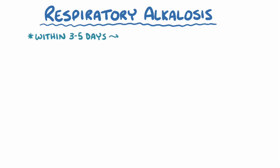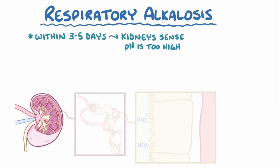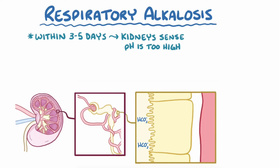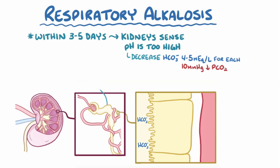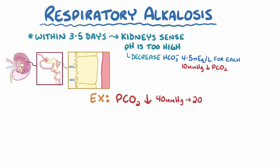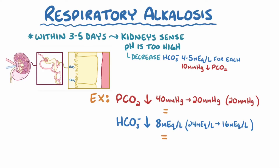Fortunately, within about 3 to 5 days, the kidneys start sensing that pH is too high and step up to help correct the imbalance. More specifically, the major way they do this is by making the cells of the proximal convoluted tubule decrease reabsorption of HCO3−, so it's excreted more in the urine. The kidneys are pretty effective at this, managing to decrease bicarbonate concentration by about 4 to 5 mEq per liter for each 10 mmHg decrease in pCO2. So if pCO2 went down from 40 to 20 mmHg, plasma bicarbonate would decrease by 8 mEq per liter, from 24 to 16. This can lead to a substantial decrease in pH, bringing it closer to its normal range again.